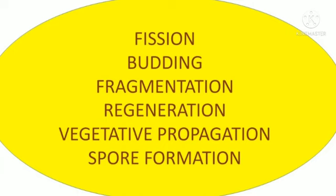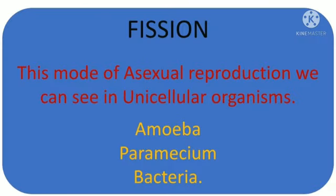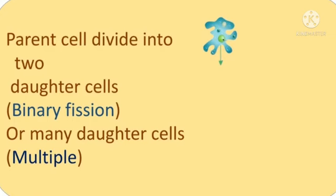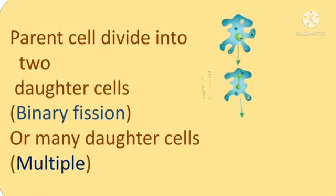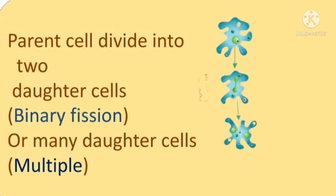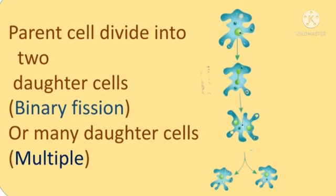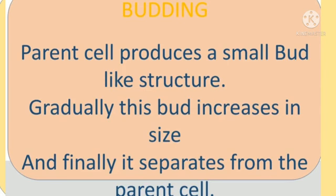Some of them are fission. This mode of asexual reproduction we can see in unicellular organisms — that is amoeba, paramecium, and bacteria. In fission, the parent cell divides into two daughter cells or many daughter cells.